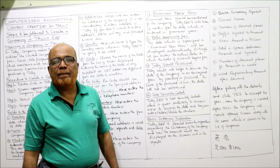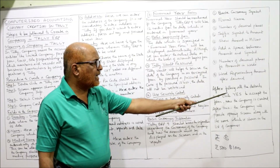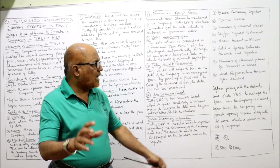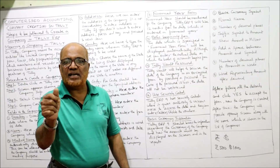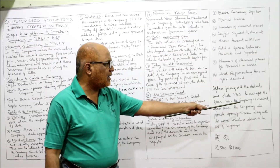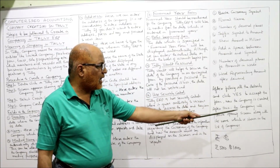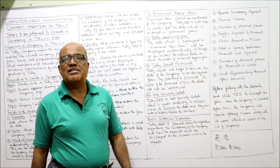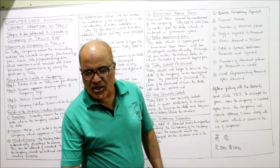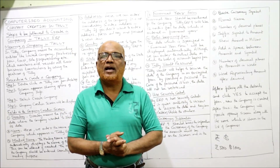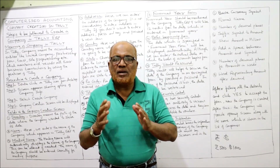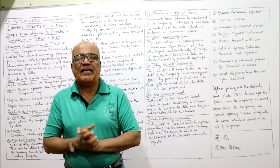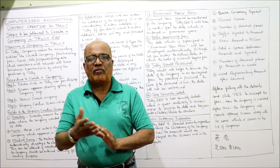After filling all the details, click 'Yes' to accept the form. The new company will then be created and the opening screen will display the company name in the list of companies. In previous examinations for Computerized Accounting, a theory question frequently asked is to explain the steps or procedure for creating a company in Tally ERP 9. This video has covered that in detail. The next topic will be discussed in the next video.